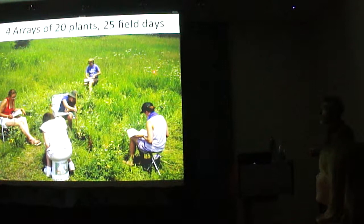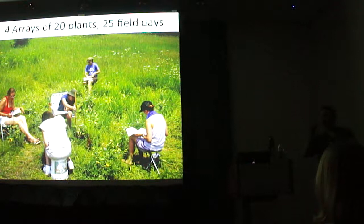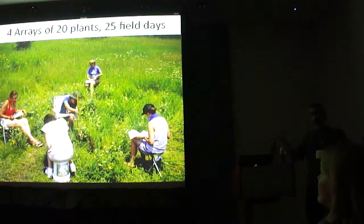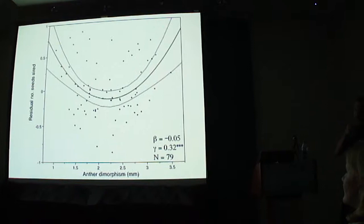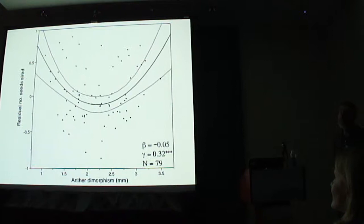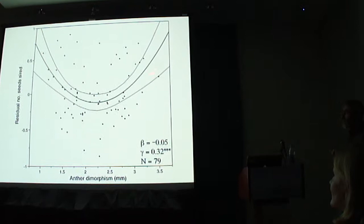First, we looked overall at selection across all 80 plants over all 25 field days. We've doubled the variance in the trait, so we should have good power to detect the stabilizing selection seen in the earlier years. The slide isn't flipped over — what we found was really good evidence for disruptive selection: really no beta, no linear trend in the data, but a highly significant positive gamma showing disruptive selection.